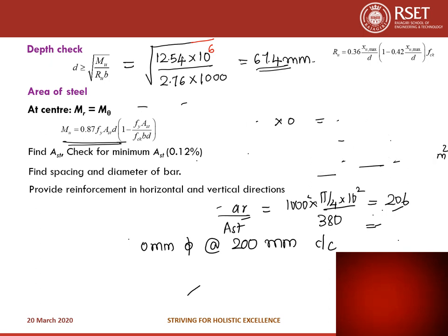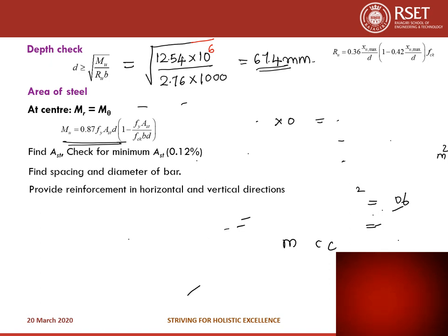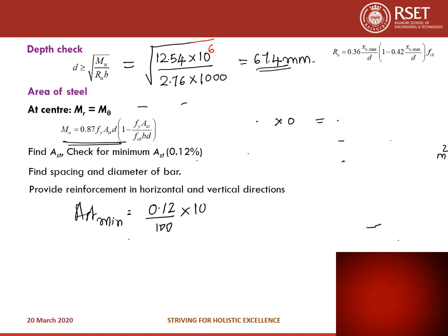Minimum steel for slabs = 0.12%. A_st minimum = 0.12/100 × 1000 × 125 = 150 mm². The provided area of steel (380 mm²) is more than the minimum. Provide 10 mm diameter at 200 mm center to center in both directions, since M_R equals M_theta at the center, both radial and circumferential moments are the same.